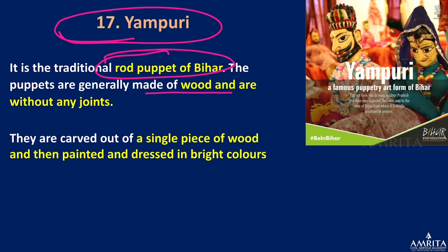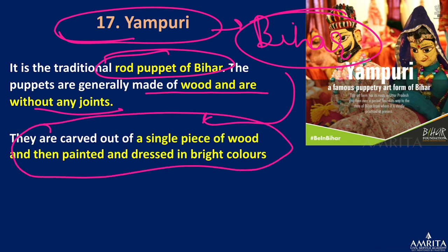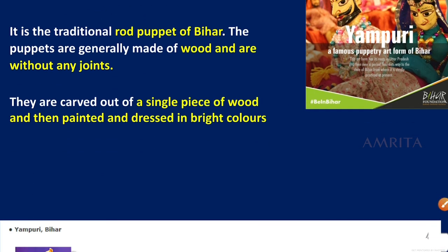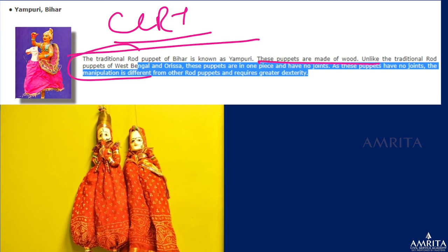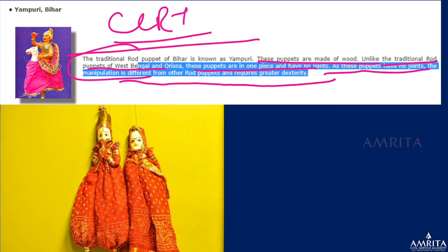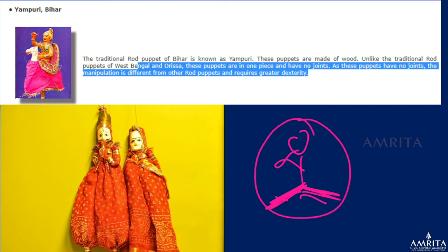Next is Yampuri, a type of rod puppetry from Bihar. The puppets are generally made of wood and without any joints — they are carved out of a single piece of wood, then painted and dressed in bright colors. Unlike traditional rod puppetry in West Bengal and Odisha, Yampuri puppets are in one piece with no joints. Puppet manipulation therefore requires greater dexterity — the use of both hands is required because there are no separate joints to control.